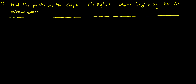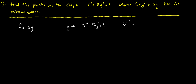The first thing in these types of problems is to figure out which is f — the function you want to maximize. In this case the function we want to maximize is x times y. The constraint, which we usually denote by the letter g, is this ellipse with the equation x squared plus 5y squared equals 1. The basic idea of Lagrange multipliers says that if you want to find the extreme points, the gradient of the function equals lambda times the gradient of the constraint.